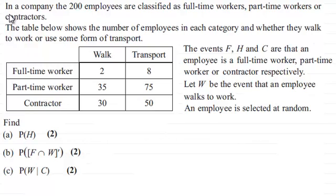So what we've got here is that in a company the 200 employees are classified as full-time workers, part-time workers or contractors. And the table below shows the number of employees in each category and whether they walk to work or use some form of transport.